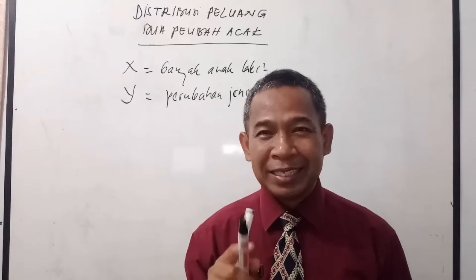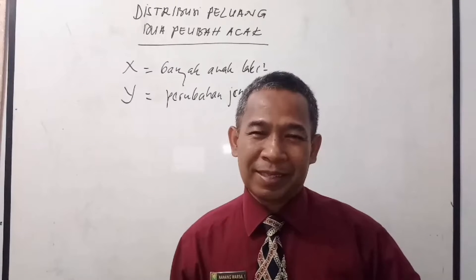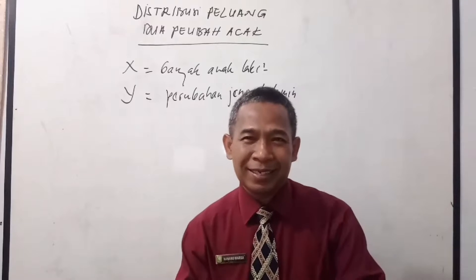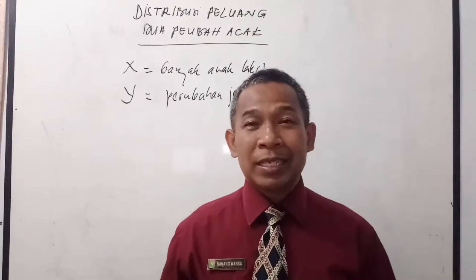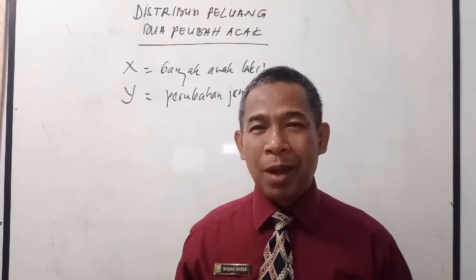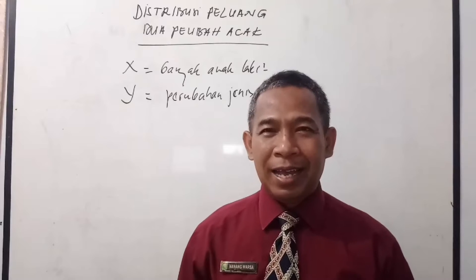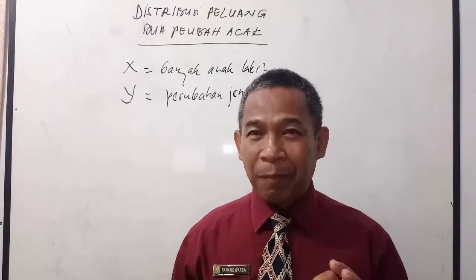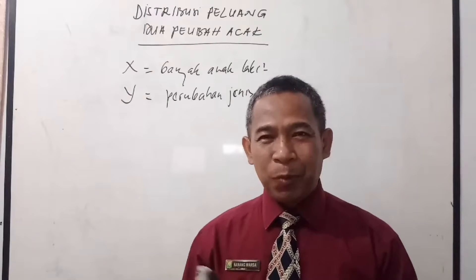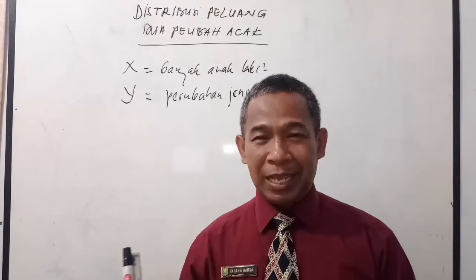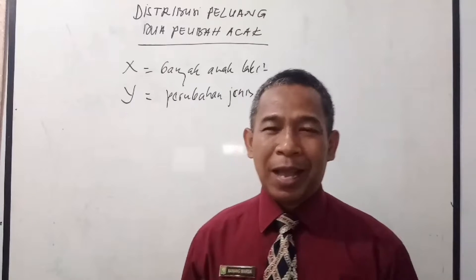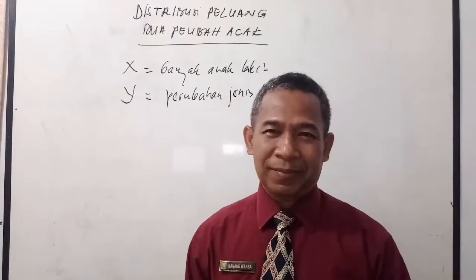Pertanyaannya, mungkin tidak terjadi tiga kali perubahan jenis kelamin? Tidak mungkin. Sehingga peubah acak Y yang menyatakan perubahan jenis kelamin hanya berkisar dari 0 sampai 2, yaitu 0, 1, 2. Jadi peubah acak X-nya adalah 0, 1, 2, 3 (banyaknya anak laki-laki), sementara peubah acak Y-nya hanya 0, 1, dan 2.